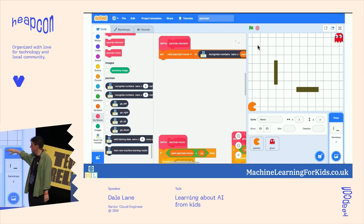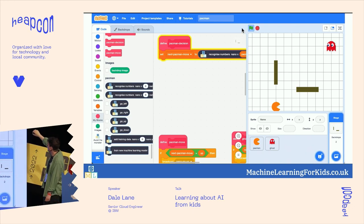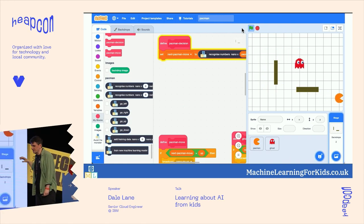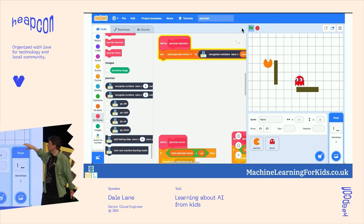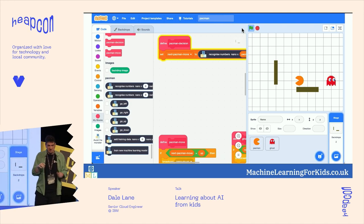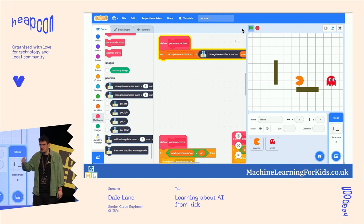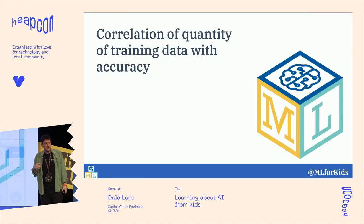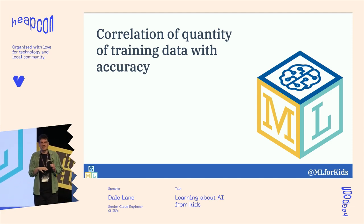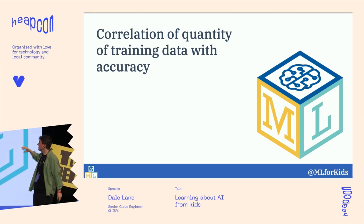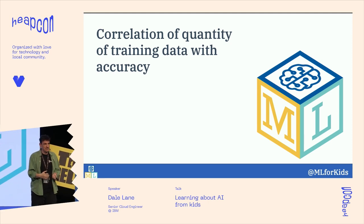Once they'd collected enough examples, they trained a machine learning model and put it in charge of Pac-Man — took their hands off the keyboard and watched it essentially play itself. When they'd only collected a few examples, their Pac-Man was rubbish — it would run straight into a wall. A bit more training and it would navigate the walls but get caught quickly. With more and more examples it got better and better, and by the end of the lesson their Pac-Man could evade the ghost forever. What they learned was the correlation between quantity of training data and accuracy of the model — the more training data you have, the better your system behaves.